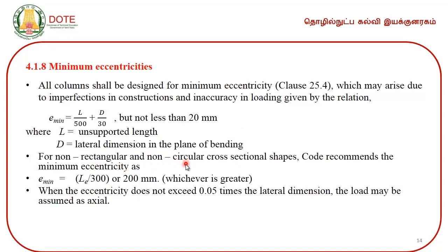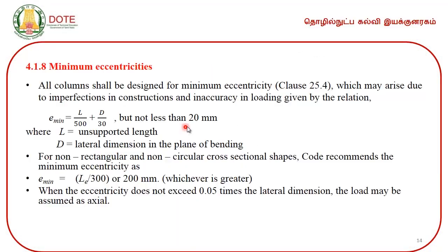For non-regular, non-rectangular, and non-circular cross-sectional shapes, the code recommends minimum eccentricity as LE/300 or 20 mm, whichever is greater. When the eccentricity does not exceed 0.05 times the lateral dimension, the load may be assumed as axial. In practice, it is not always possible to predict whether the load passes through the central axis, so the code recommends a minimum eccentricity of 20 mm, restricted to 0.05 times the lateral dimension.